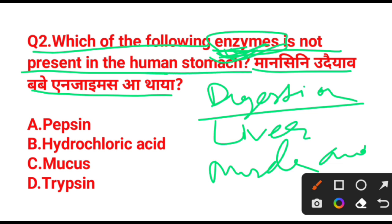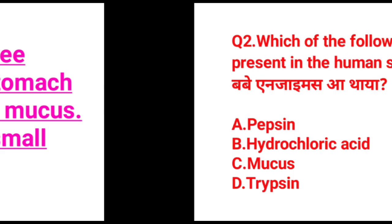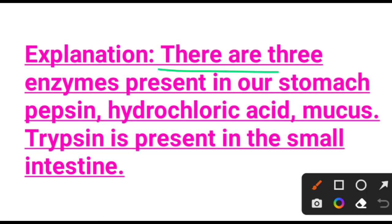Right, the question is about which enzyme is not present in the human stomach. The answer is trypsin — trypsin is the enzyme not present in the human stomach. There are three enzymes present in our stomach: pepsin, hydrochloric acid, and mucus.